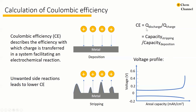The Coulombic efficiency equals the charge released during the discharge cycle over the charge obtained during the charge cycle. For evaluating the reversibility of a metal anode, the Coulombic efficiency is usually calculated from the voltage profile, and it equals the capacity of the stripping process over the capacity of the deposition process.